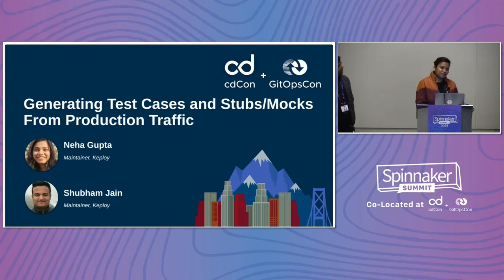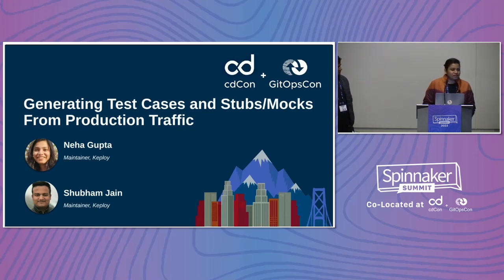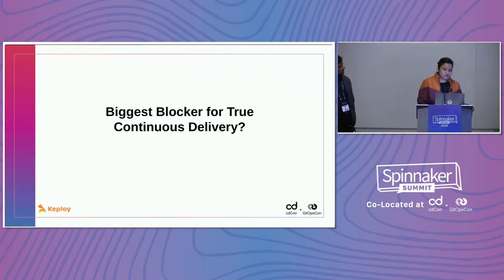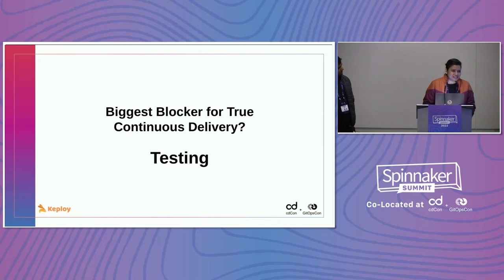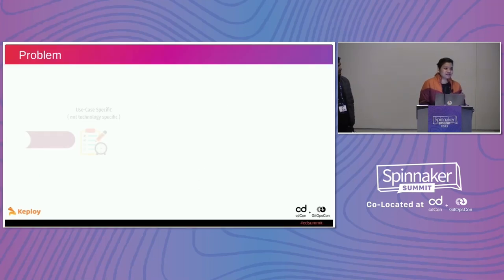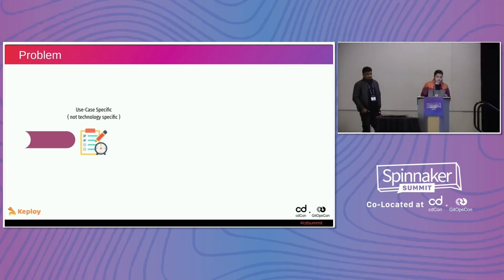In the last two days, we have heard a lot about tools that can help us automate our CI/CD pipelines and make them more secure, but there is one major blocker still to achieve true continuous delivery. We believe that is testing. Why? Because it is still very use-case specific and not technology specific.